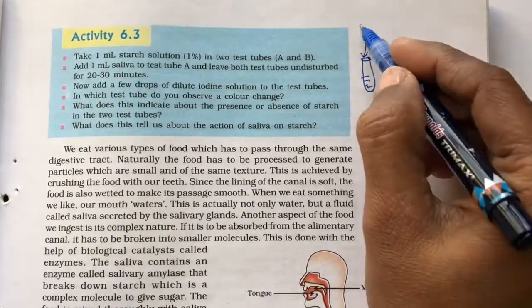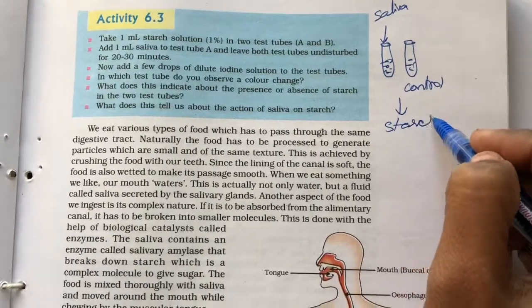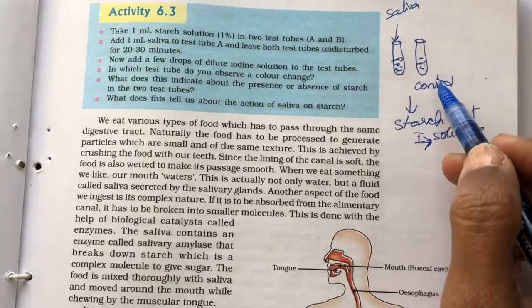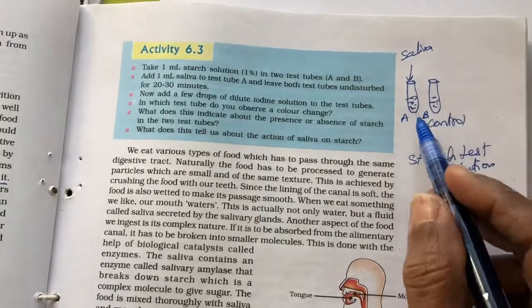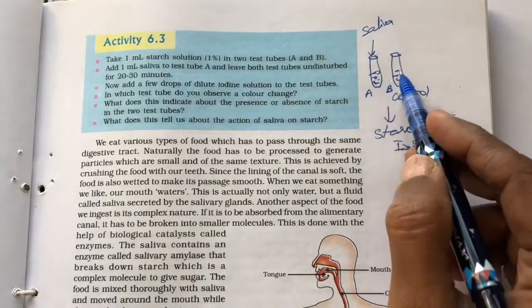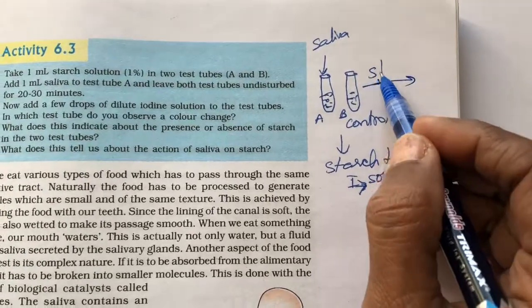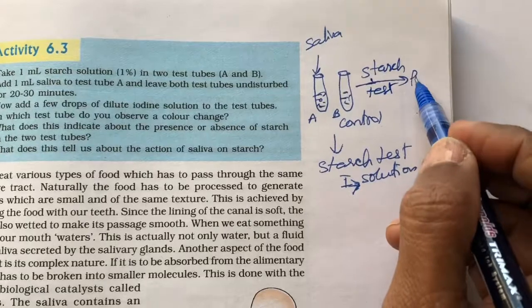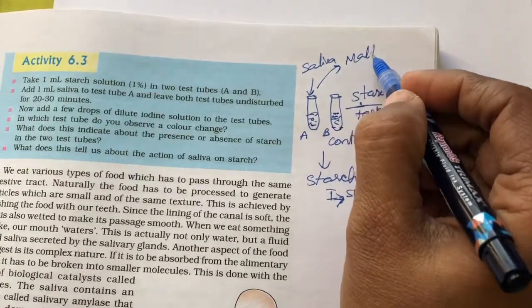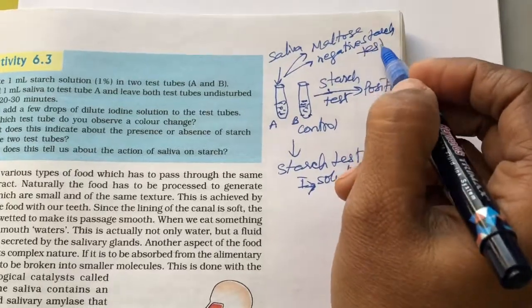Now when we have taken starch in two test tubes and in one we have added saliva and the other you can keep it as control, there is no saliva added. Now after some time when we will be going for the starch test, starch test means just add iodine solution. So, if the one that is having starch still will be showing the blue black color, suppose this is A and this is B. So the A will be digesting, in this A test tube the saliva will be digesting the starch and it will be converted to maltose. But in the second one because this has no enzyme, so this will be still showing the process, this will be still undertaking the starch test positive. Because there is no digestion of starch, it just contains starch, but because in this starch is digested into maltose, so there will be a negative test, negative starch test.